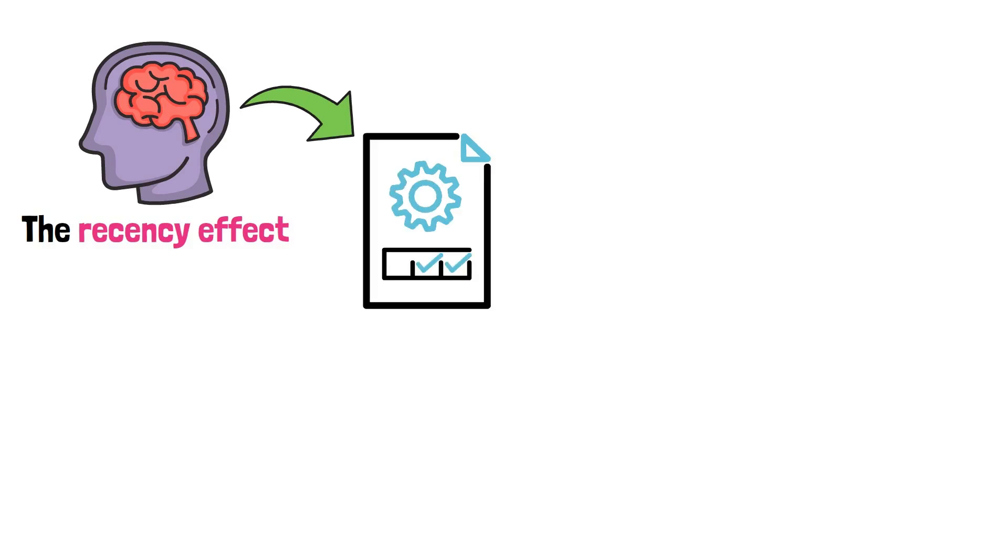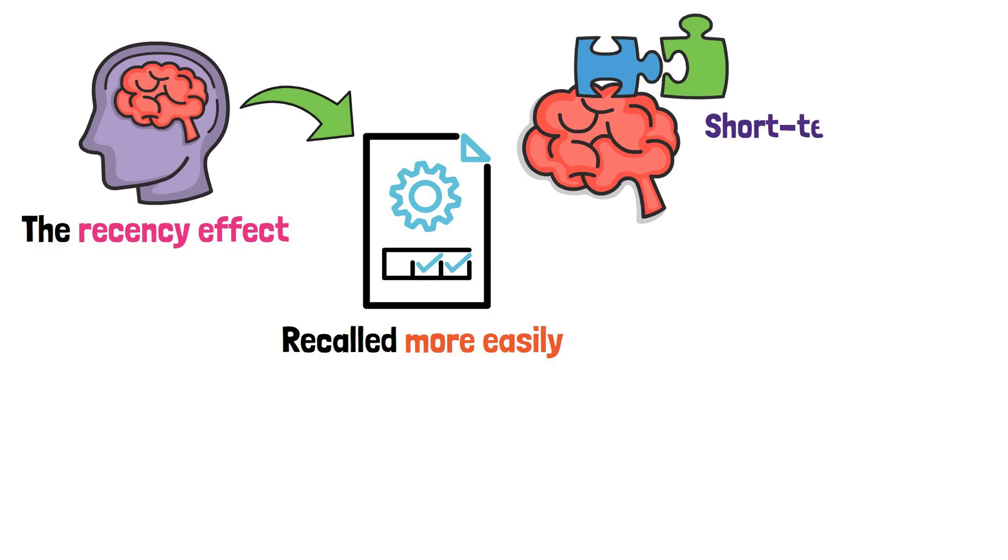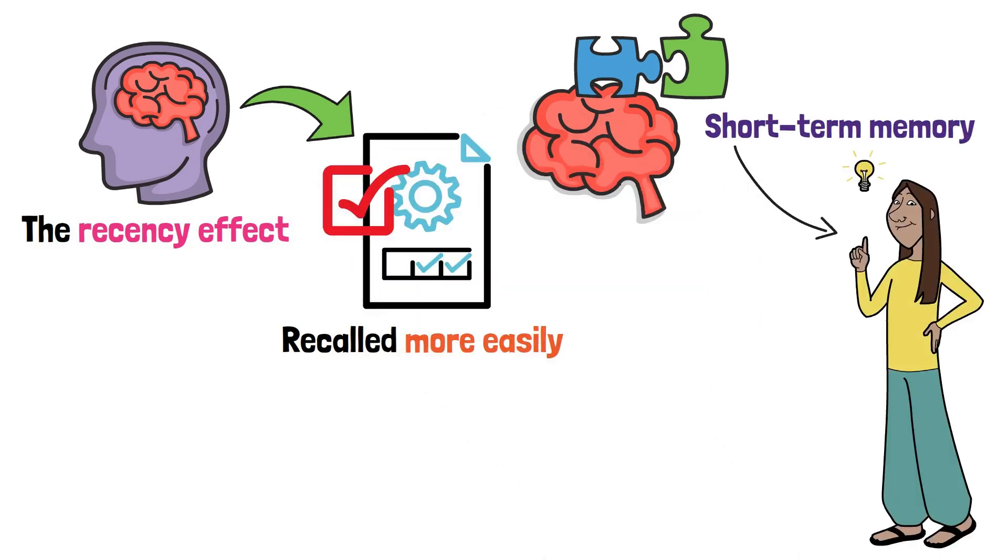On the other hand, the Recency effect describes how the most recent items, typically at the end of a list, are also recalled more easily. This effect relies heavily on short-term memory. Since these items are still fresh, they remain easily accessible.